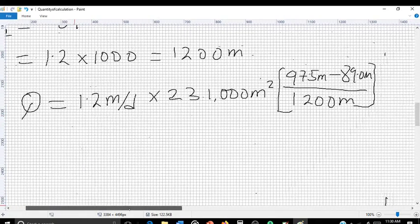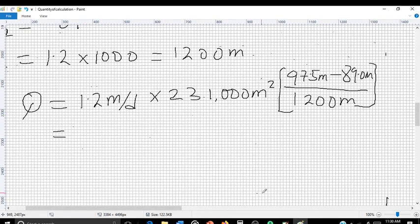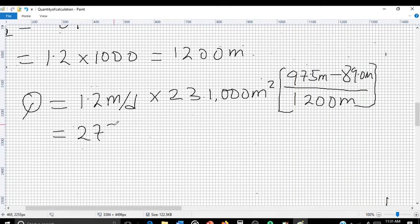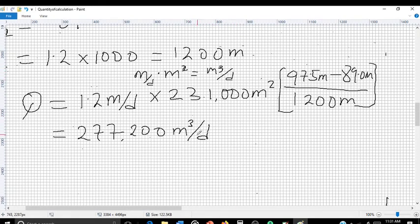Next step, let's multiply 1.2 meters per day by 231,000 meters squared. So we have 277,200 meters per day. By doing dimensional analysis, we have meter cube per day because meter per day times meter squared equals meter cube per day. That is how we got this unit.